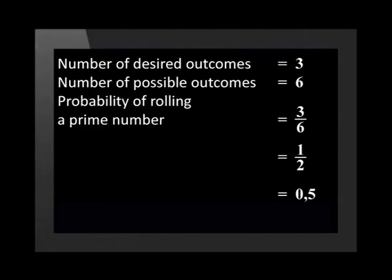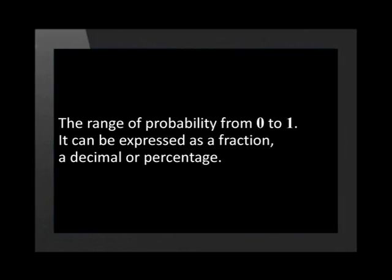We can present this as the decimal 0.5, and the same answer can be expressed as 50%. Now that we've done a simple problem, let's make some observations on probability. The range of probability is from 0 to 1, and it can be expressed as a fraction, a decimal, or a percentage. To change a fraction to a decimal, we divide the top of the fraction by the bottom. To change from a decimal to a percentage, we multiply by 100.